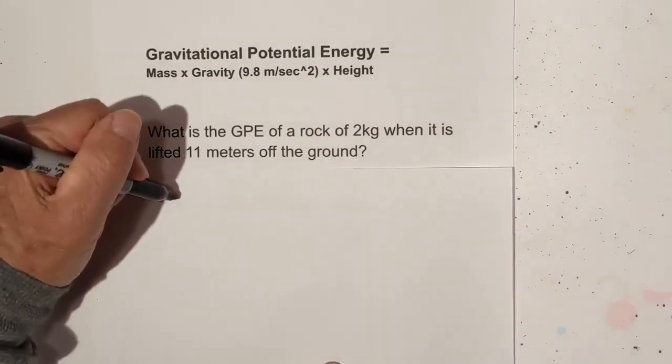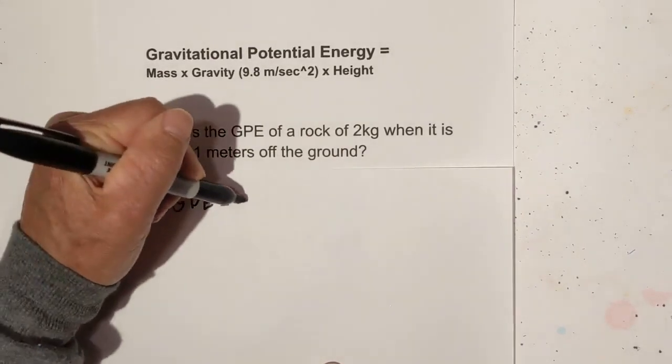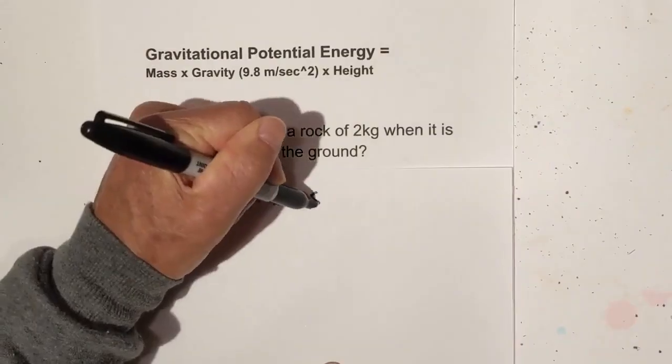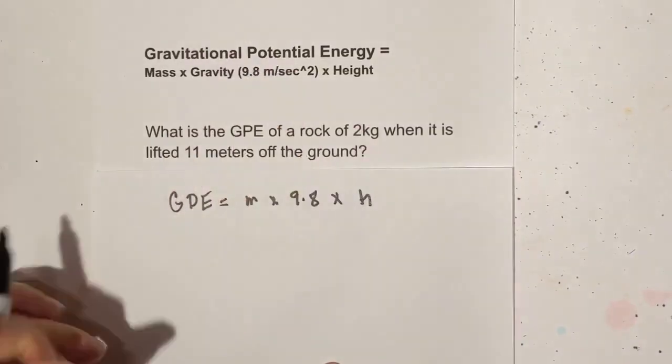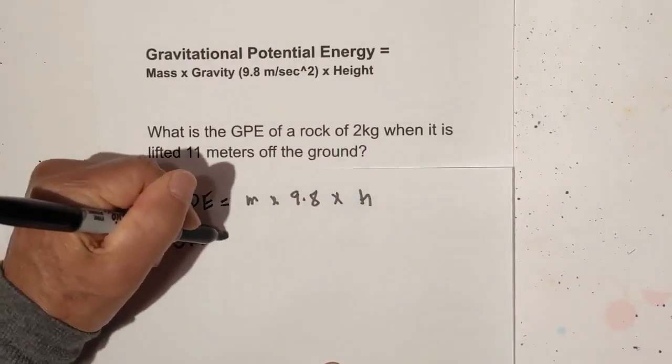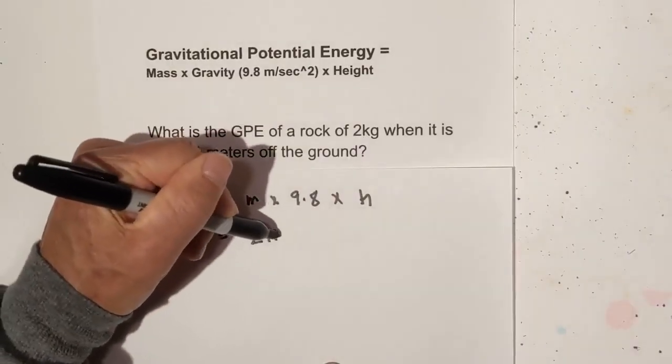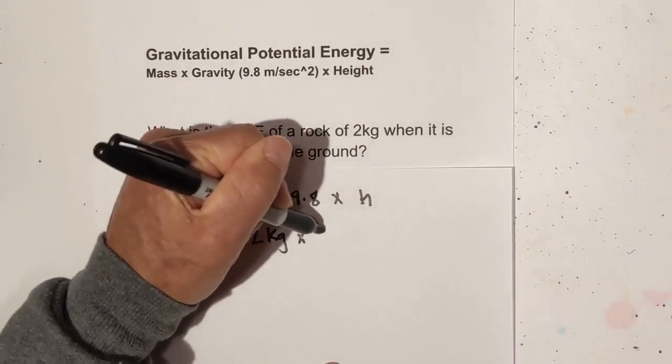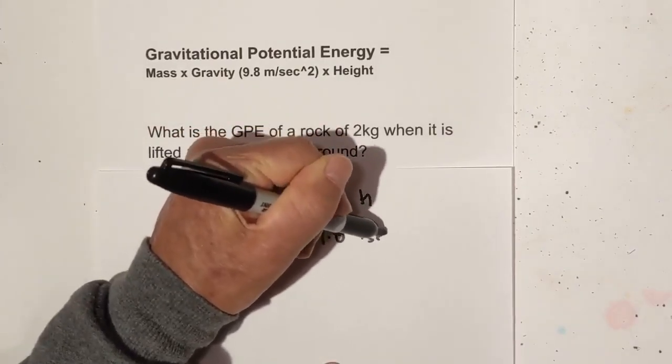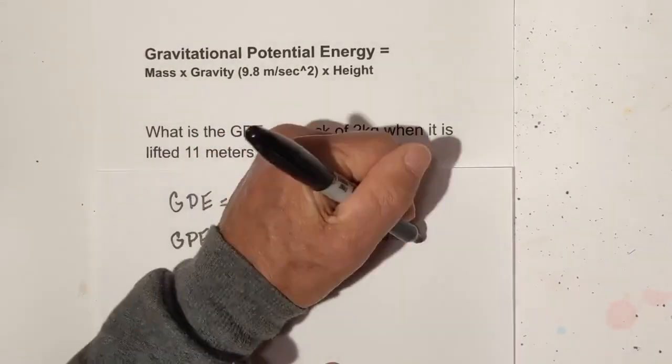Let's just plug in the formula. We've got GPE equals mass times 9.8 times height. Now let's start plugging stuff in. The GPE equals the mass is 2 kilograms. We know that the constant, and I'm going to write the units because it's important that you see how the units cancel out, and the height is 11 meters.